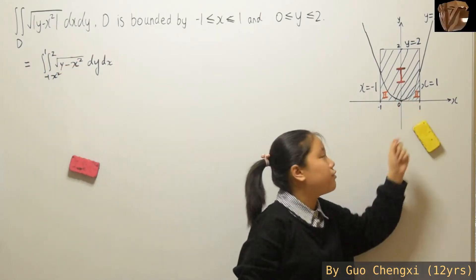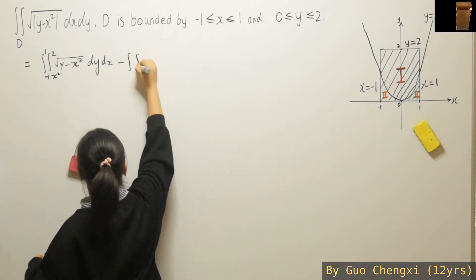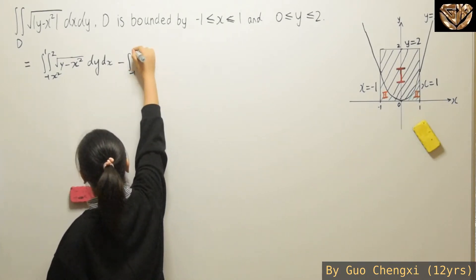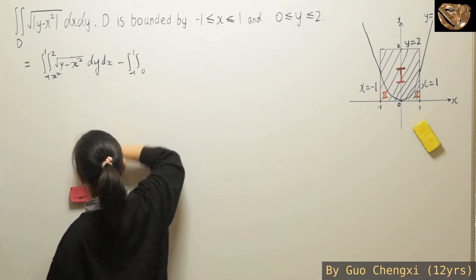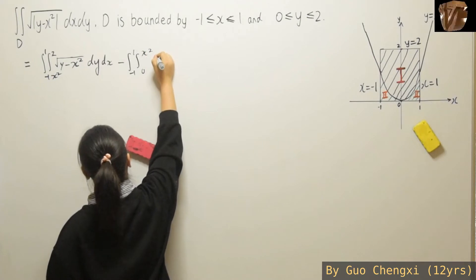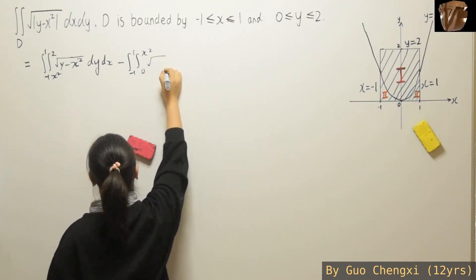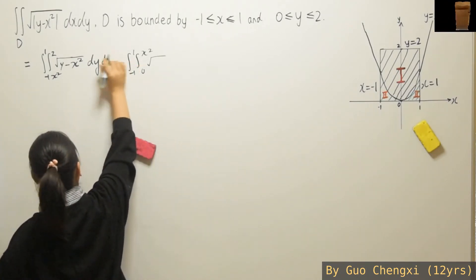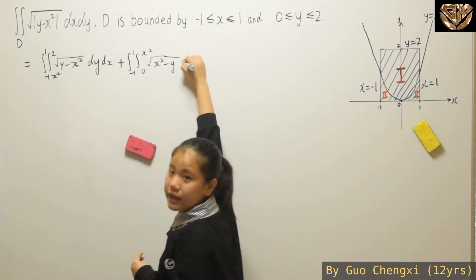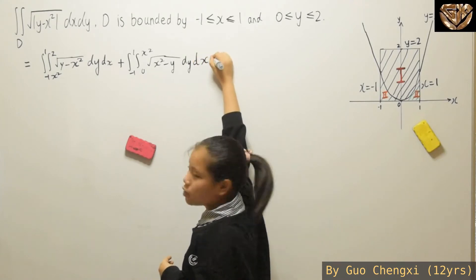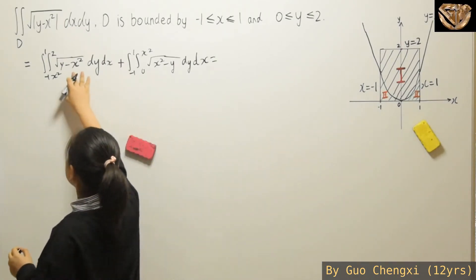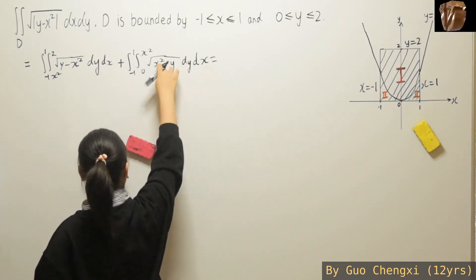For the positive part, y goes from x squared to 2 — the part above the parabola. For the other part that we have to subtract, anything within that boundary will be negative. So for that part we have x squared minus y, dy dx. Now we can integrate with respect to y, because x in this case is basically a constant. But for the negative part, you need a minus in front.